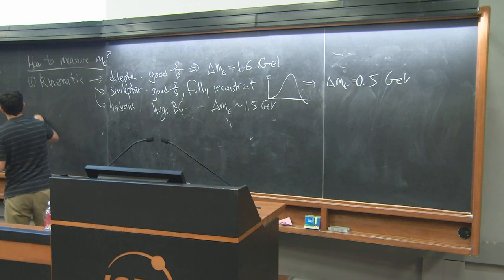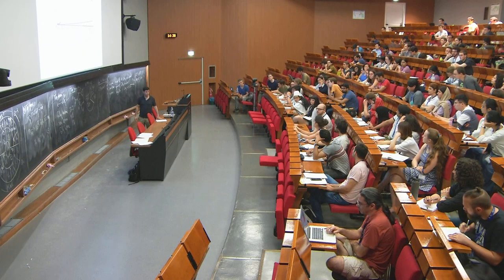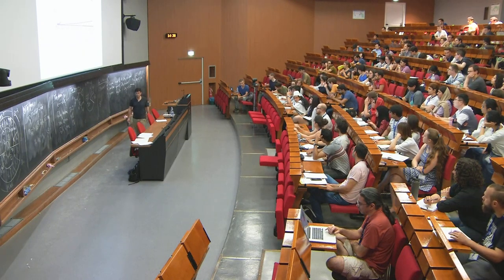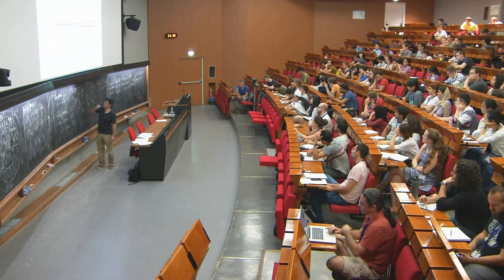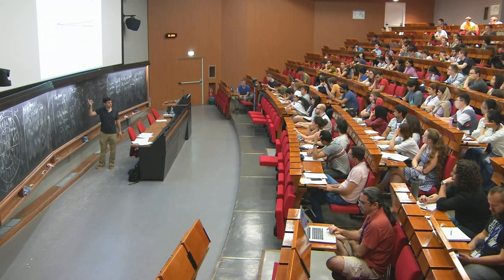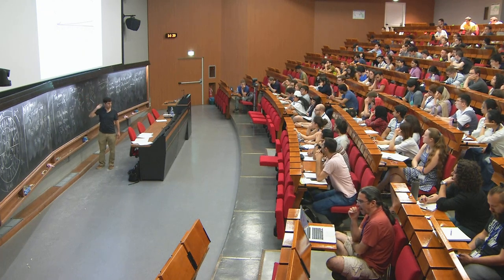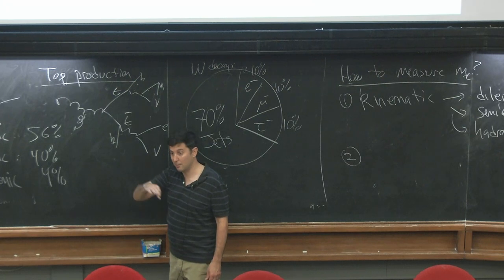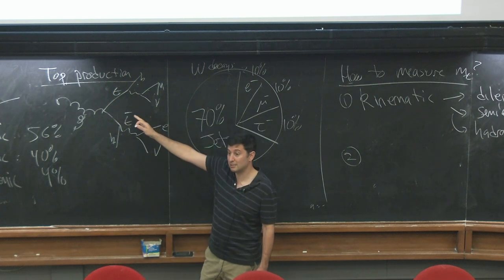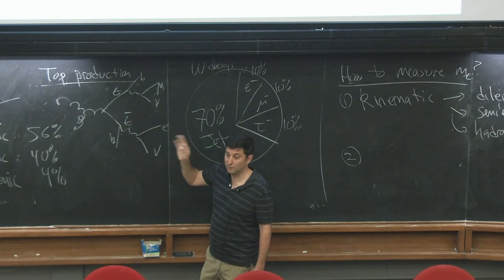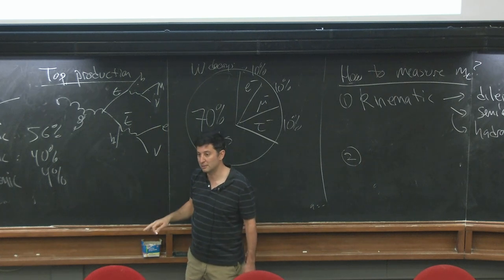The third method is a threshold scan at e+e-. The idea is to change the center-of-mass energy and look at the cross-section for e+e- → TT-bar as a function of √s. The cross-section turns on around 350 GeV. What's really neat about the top is that there's actually a metastable bound state from gluon exchange slightly below the TT-bar threshold — you see a little blip below 350 GeV. If you can measure this shape very well, you can determine the bound state mass precisely, which is very sensitive to the top quark mass. If we could build an e+e- collider and run near 350 GeV — which is about 100 GeV higher than what we discussed earlier, and very expensive — we could potentially measure δMT < 100 MeV.